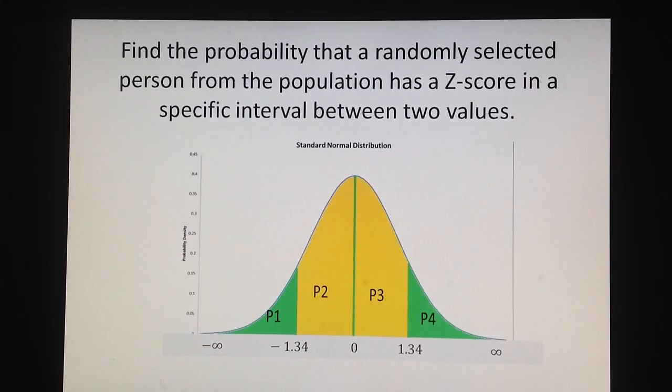On the other side of the mean of the population, which is always zero on the normal or standard normal curve, is the mirror image of my score, z of positive 1.34. However, the probability that a randomly selected individual will have z-score more than positive 1.34 is P4, and due to the symmetry P4 and P1 are equal. The same is true for P2 and P3.